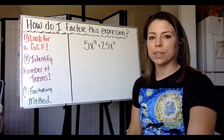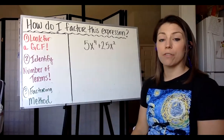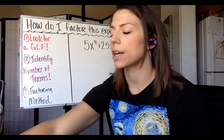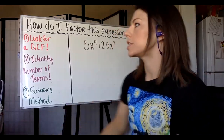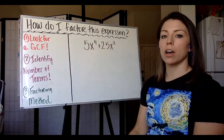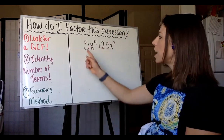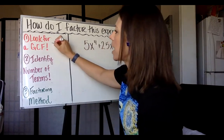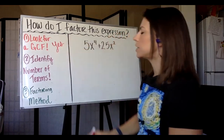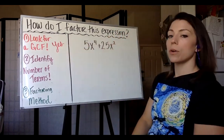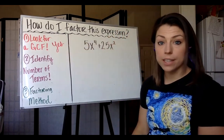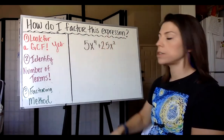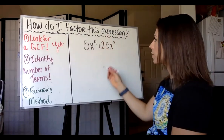Our first example is 5x to the fourth plus 25x squared. The first step is that we look for a GCF — meaning do both terms have a common factor? I see that both terms have five in common, so yes, this has a GCF. We're going to factor out that GCF from both terms and then continue on with our flowchart.